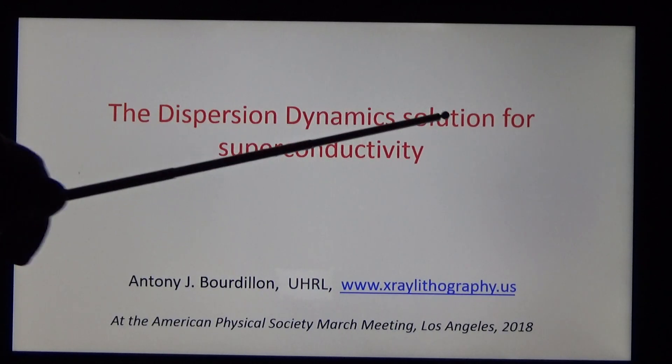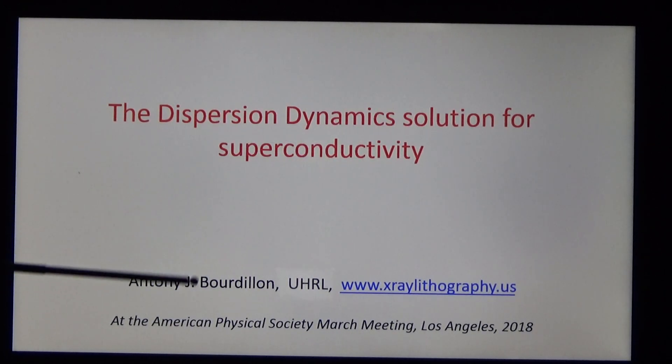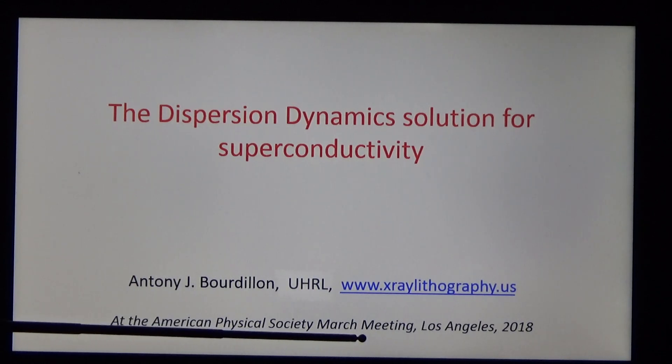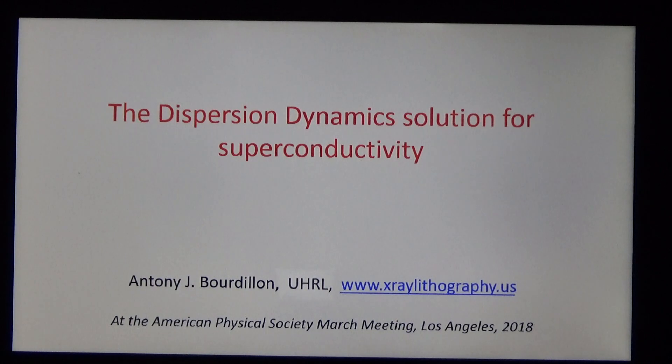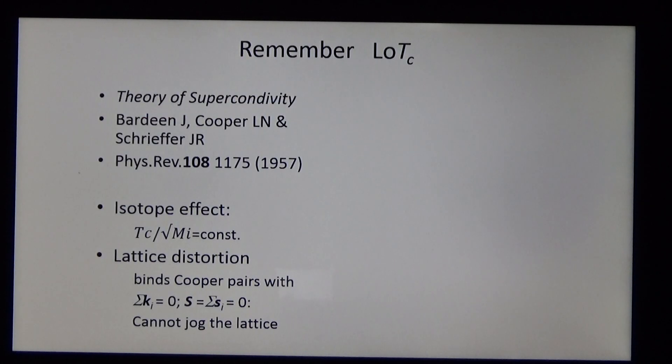The dispersion dynamics solution for superconductivity was given to the American Physical Society March meeting in Los Angeles in 2018. The theory of superconductivity was given to us 60 years ago by Bardeen, Cooper and Schrieffer. The isotope effect showed that lattice distortions bind Cooper pairs with zero momentum and zero spin.